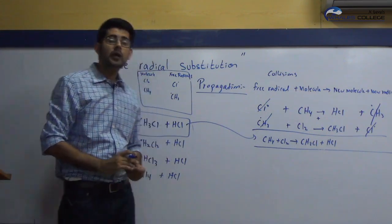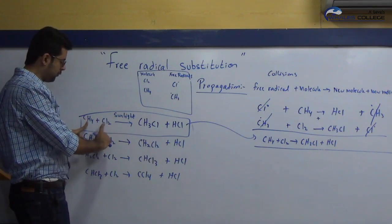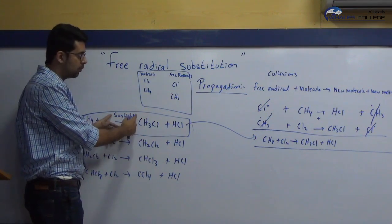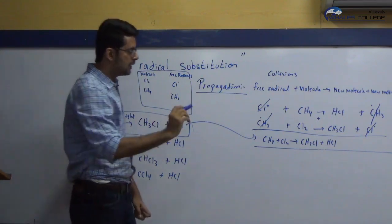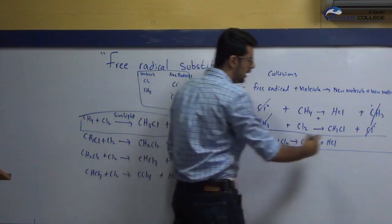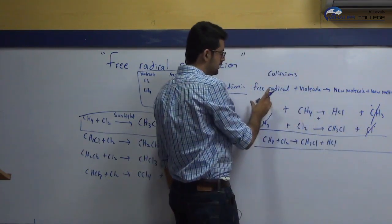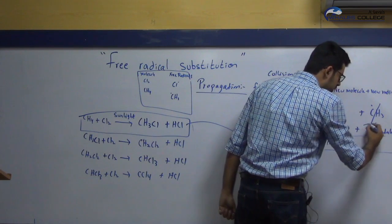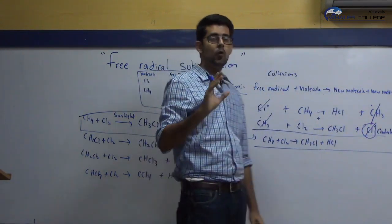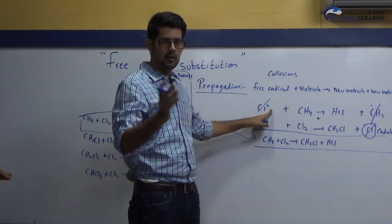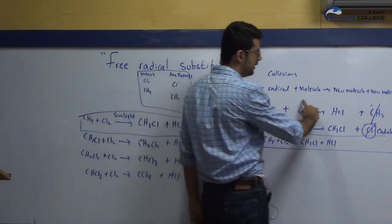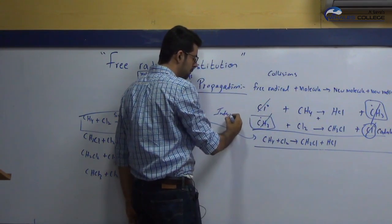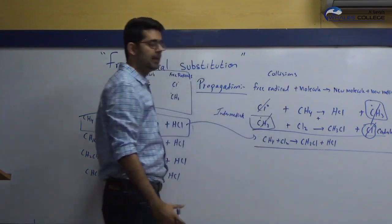The chlorine free radical is present at the start of the reaction and is reproduced at the end — anything that is present at the start and reproduced at the end is called a catalyst. So this chlorine free radical is a homogeneous catalyst, because it is in the same physical state as the reactants. The CH₃ radical is produced in the first step and used up in the next step — anything produced in one step and consumed in the next is called an intermediate.